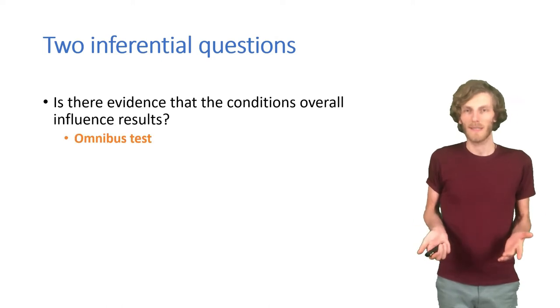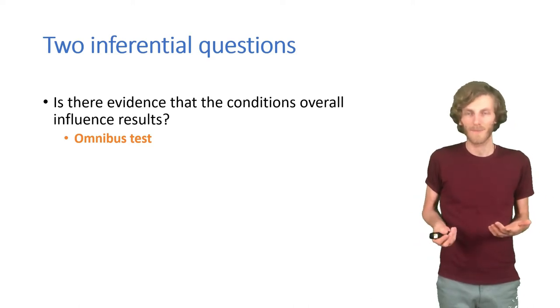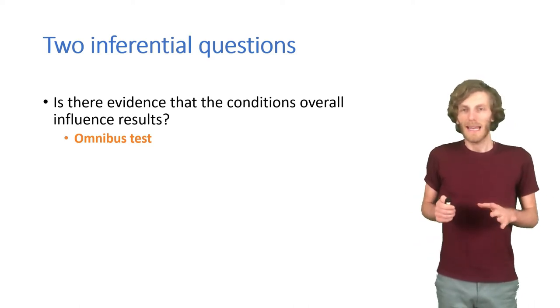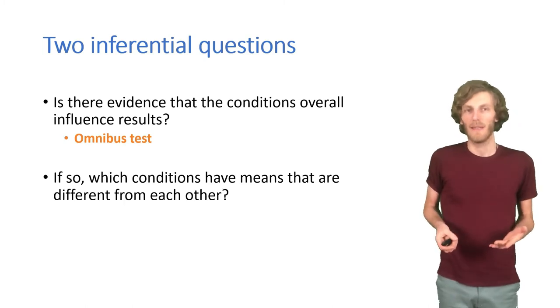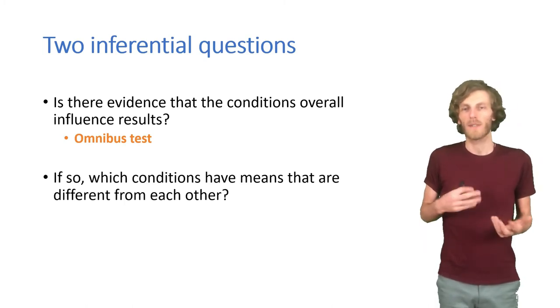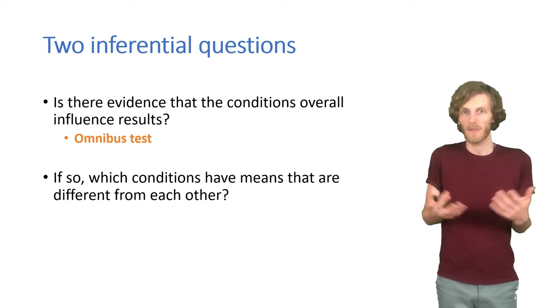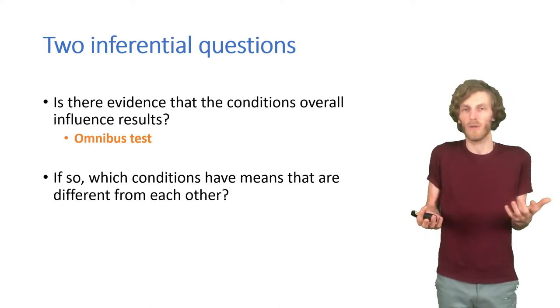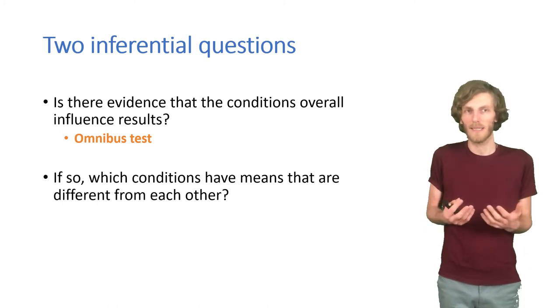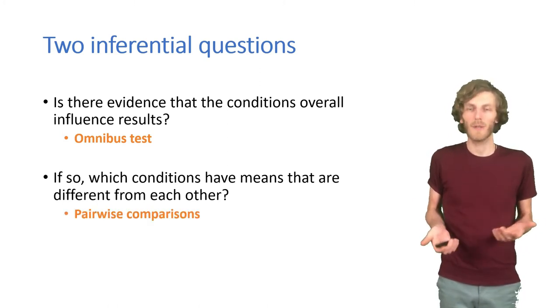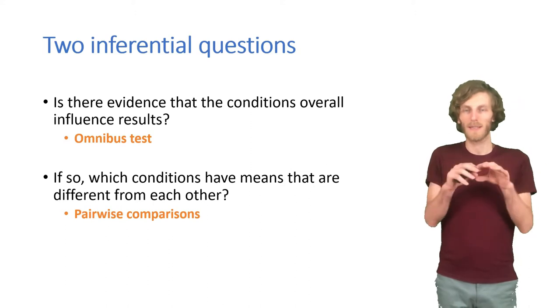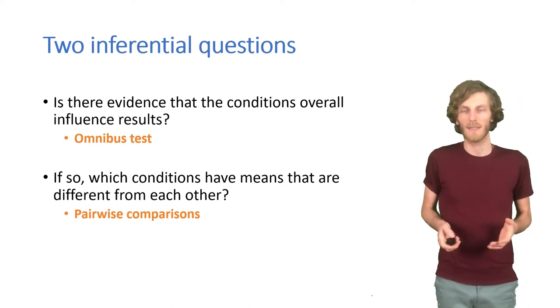The first question is, do we actually have evidence that these conditions have some impact? That's what's called an omnibus test. So first we are interested in, do the results differ depending on what conditions the participants are in? If we can say yes at that point, then the next question is, which of the conditions are actually different from each other? There might be some difference in these conditions, but maybe not all four are actually different from each other. So there we are doing pairwise comparisons. We are looking at pairs of conditions, trying to figure out whether they are different.